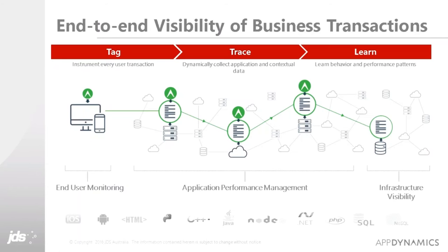So how do we do this? With AppDynamics EUM, we install smart agents into your web or mobile applications. These agents gather rich performance information as well as error and crash information from your apps in real time. They also automatically inject a unique ID, which allows us to trace requests all the way from those devices or browsers into your backend systems, across different tiers, right down to SQL calls, individual servers, and calls out to remote APIs.